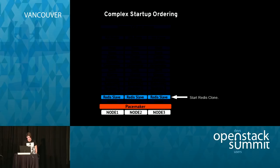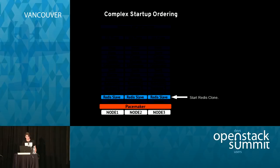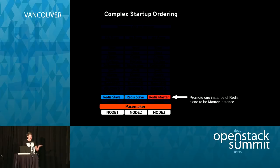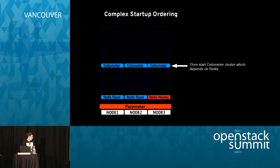Another example of complex start ordering is Redis. We're using Redis for Ceilometer, and Redis uses master-slave replication. We start every instance of Redis in slave mode, Pacemaker picks one out and starts it as master, and only once the master is up will Pacemaker start anything that depends on Redis.